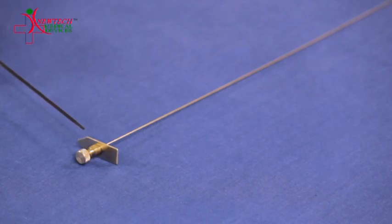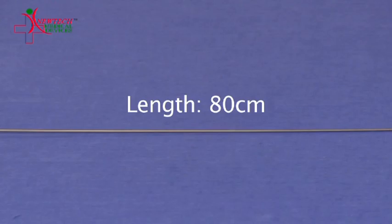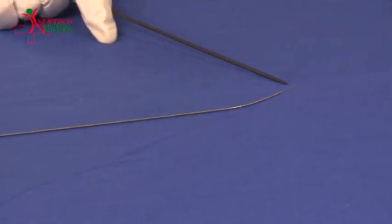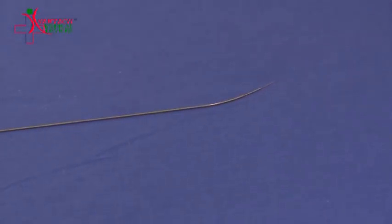The length of this transeptal needle available is 80 centimeters. Its tip is appropriately angled so that it can prick the wall of the heart easily during the mitral valvoplasty procedure.